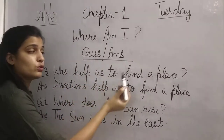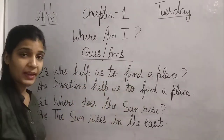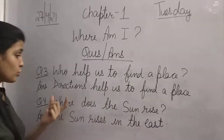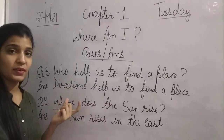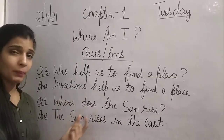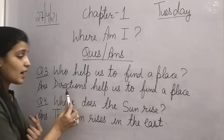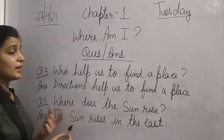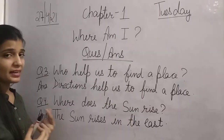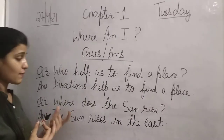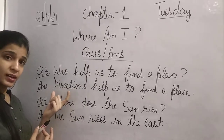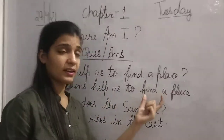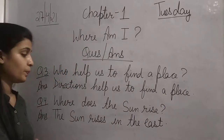The next question is: Who helps us to find the place? With the help of direction we can find out the place. Directions help us to find a place. If we want to find some place, we have to take help from the direction, and direction helps us to find a place.